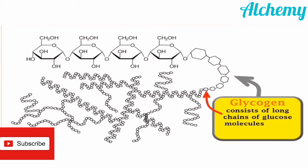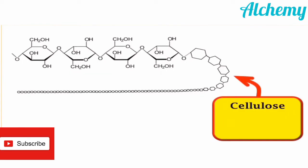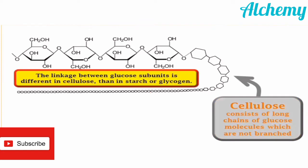Glycogen consists of long chains of glucose molecules which are highly branched. The next polysaccharide is cellulose, which is a major constituent of plant cell walls. Cellulose consists of long chains of glucose molecules which are not branched. The linkage between glucose subunits is different in cellulose than in starch and glycogen.